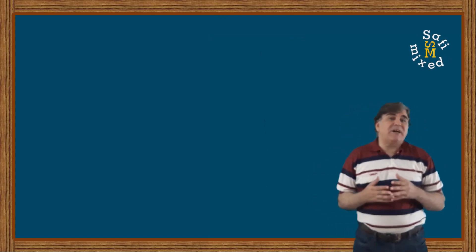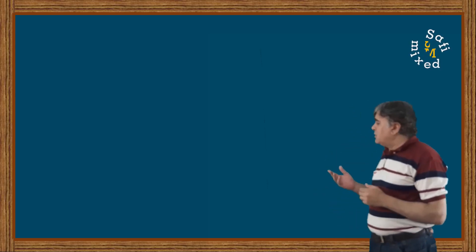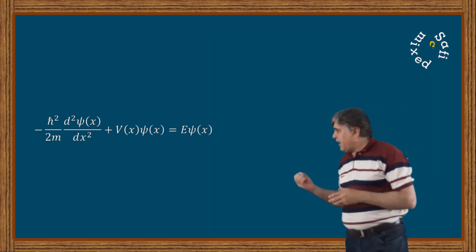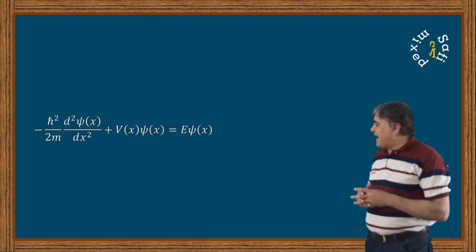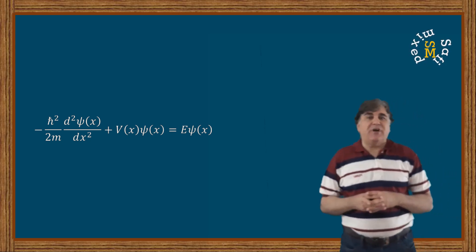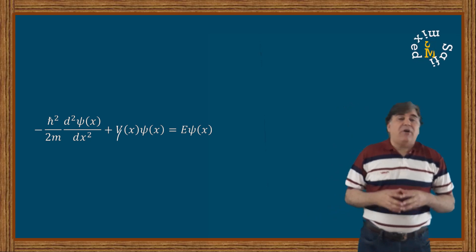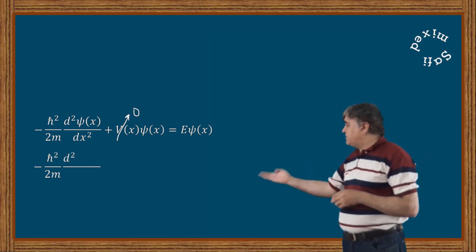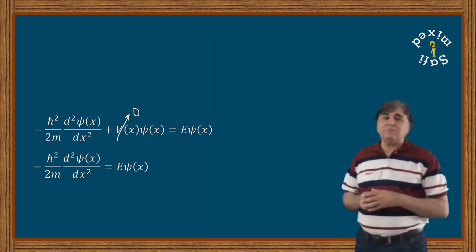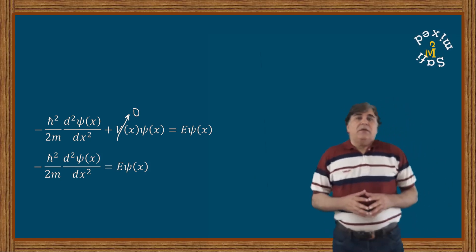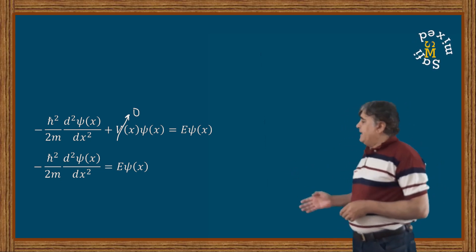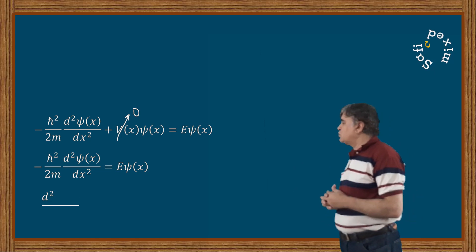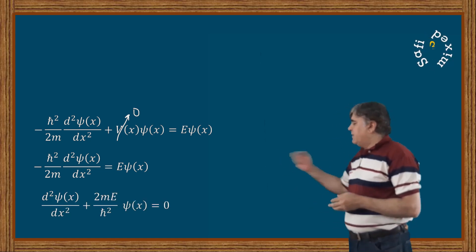Let us write down the one-dimensional time-independent Schrödinger wave equation along the x-axis for a particle of mass m. The equation involves V(x), the time-independent potential energy. For a free particle V(x) is zero, so the equation reduces to a simpler form. Rearranging and multiplying through by minus 2m divided by ħ gives us equation one.